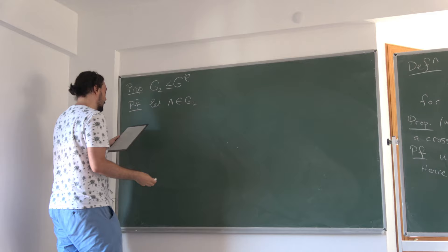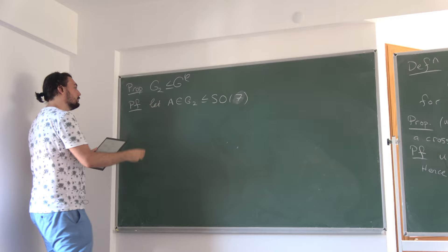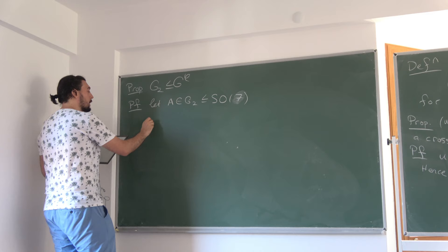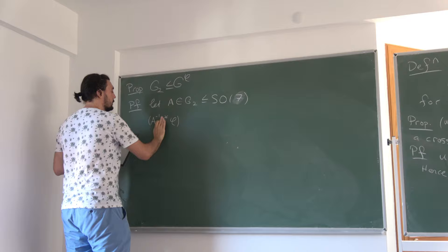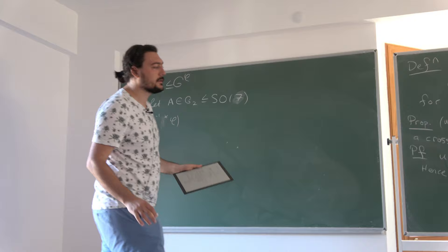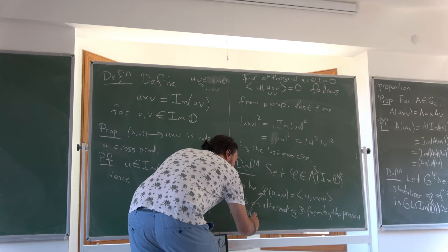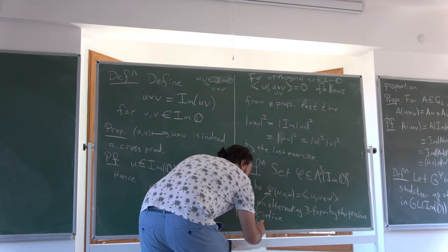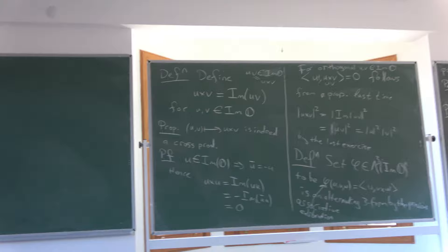By the way, this three-form will be called the associative calibration — that's the name we'll give to it. There will also be a capital Φ later. Now we want to prove the other inclusion: G^φ is a subgroup of G2. I first saw a similar argument in Robert Bryant's classical Annals paper, so I'll be imitating that. For convenience, let's introduce new names for the basis elements: I₁ = E₀, E₁ = i, E₂ = j, and so on, up to E₇ = lk — these are just the generators from last time with new names.